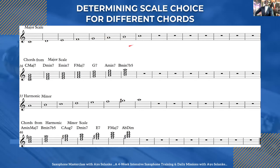When you stack each of the thirds — you know that chords are basically formed from thirds. That means one, two, three, four, five, six, seven, eight, which is also the octave. So from one you jump to three. When you stack one, three, five, seven, you get this one.